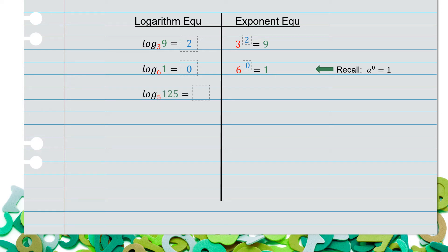Next, we have log base 5 of 125. That really means 5 raised to some power equals 125. What is that power? That would be 3.